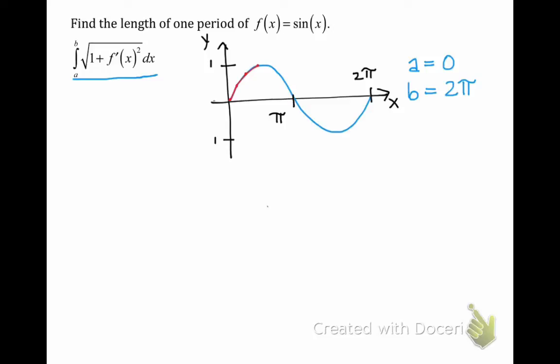Now we're ready to find our integrand. We see that the formula calls for the derivative of f of x. Our function is f of x equals sine of x, so we will differentiate this, resulting in f prime of x equals cosine of x.